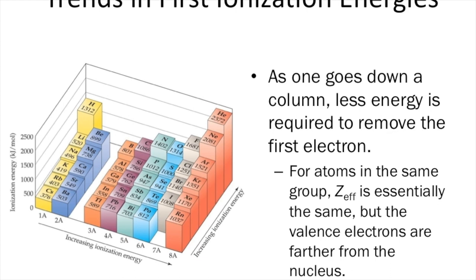As you move from left to right across the periodic table, ionization energy increases — it's harder to remove the electron. That all goes back to the proton. As you move from left to right, you get more protons in the nucleus, and because you get more protons, it's harder to remove an electron because that nucleus is pulling harder on it. You have a higher effective nuclear charge.